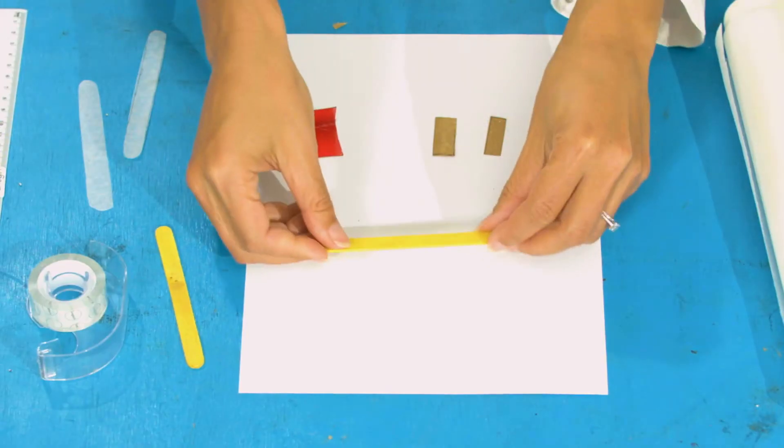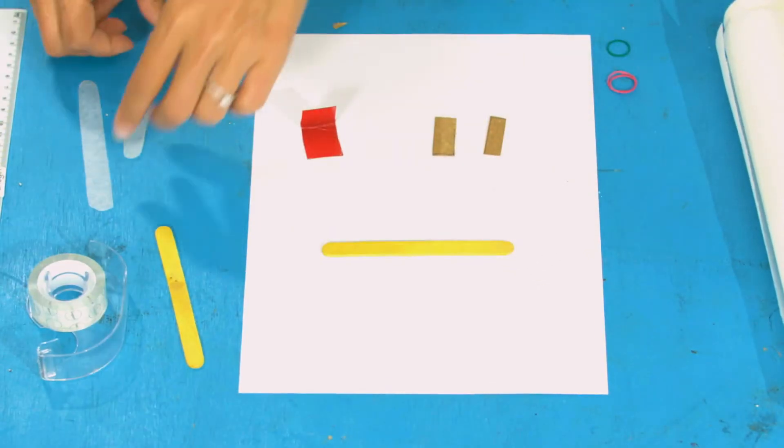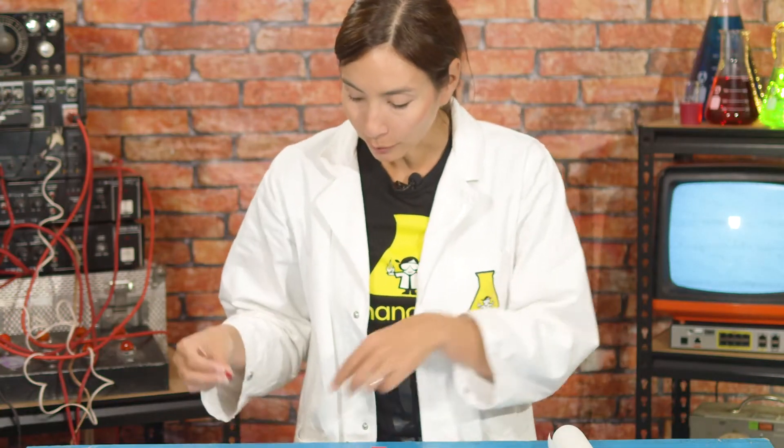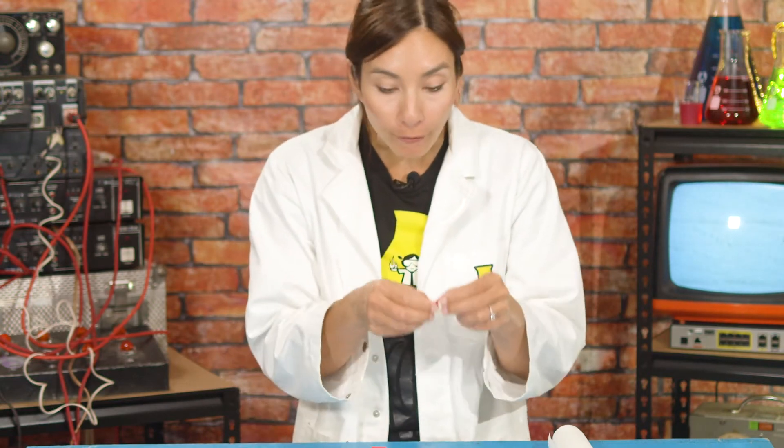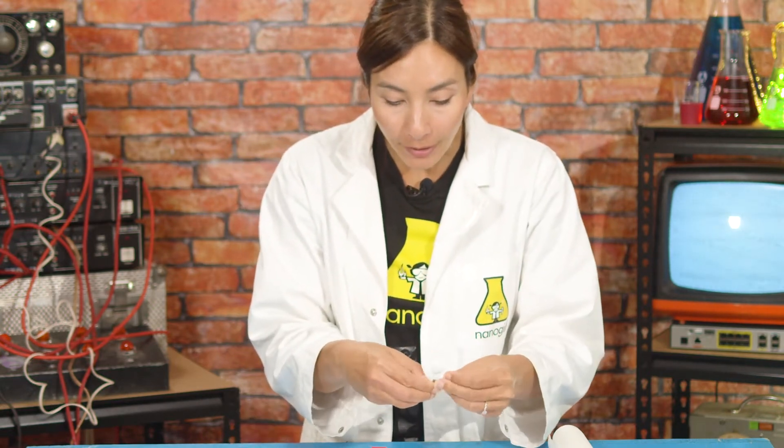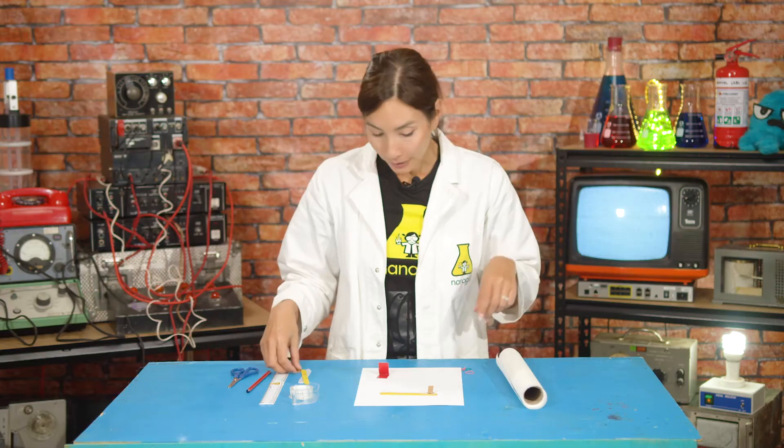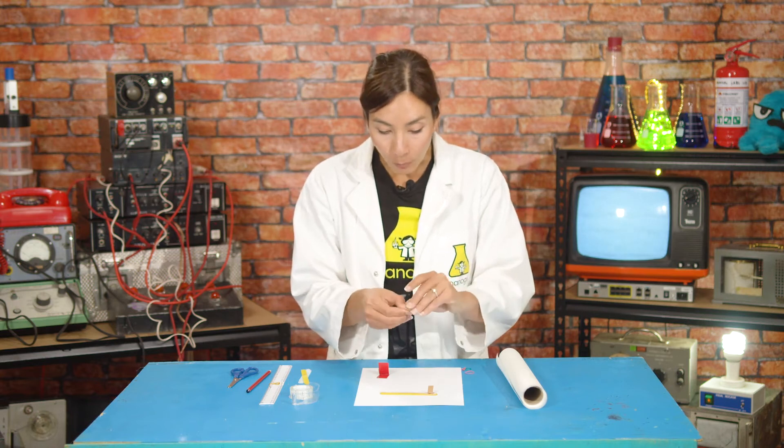Take one of the popsicle sticks and lie it down, and then add a piece of baking paper on top. Next you're going to add one of your smaller rectangles, but you're going to fold it in half first and place it at one end of the baking paper here like this.